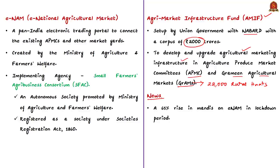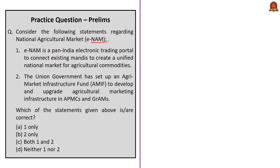Let us take up the news article, which says that there has been about a 65% rise in mandis on the e-NAM platform during the lockdown period. About 177 mandis joined the e-NAM platform, taking the total to about 962 nationwide. As it has become difficult to trade commodities outside due to COVID-19, APMCs are coming forward and registering themselves on the e-NAM portal. Two statements are given about the National Agriculture Market. Both statements — that e-NAM is a pan-India electronic trading portal connecting mandis, and that AMIF has been set up to develop and upgrade agriculture marketing infrastructure in APMCs and GrAMs — are correct. Therefore, the correct answer is option C, both 1 and 2.